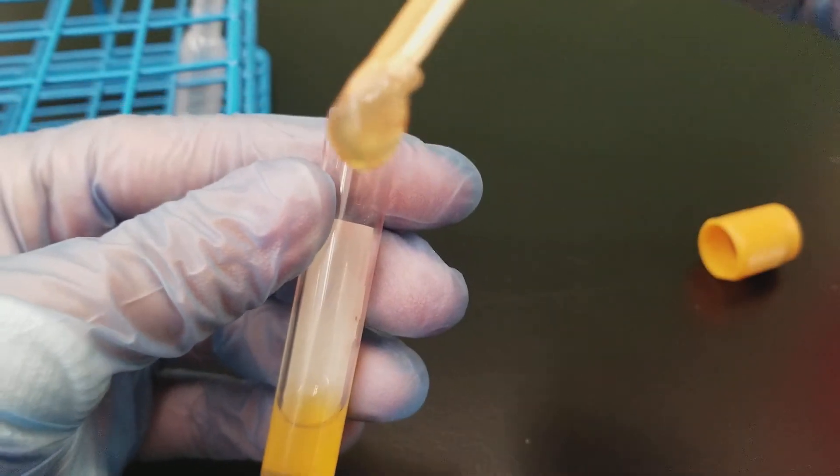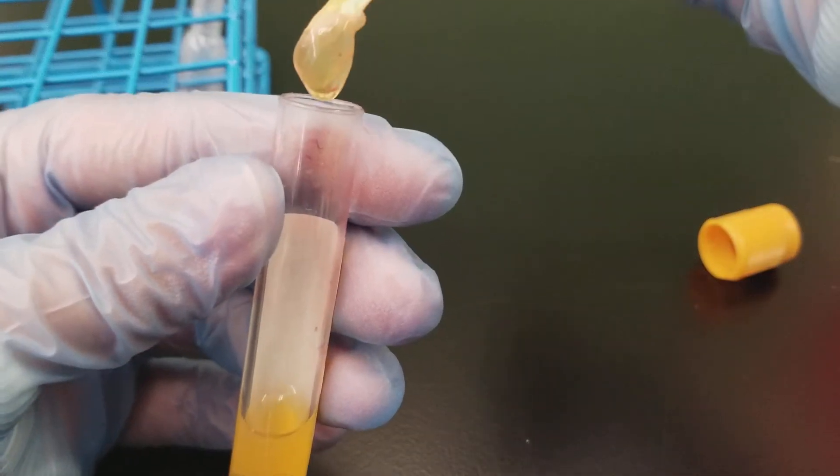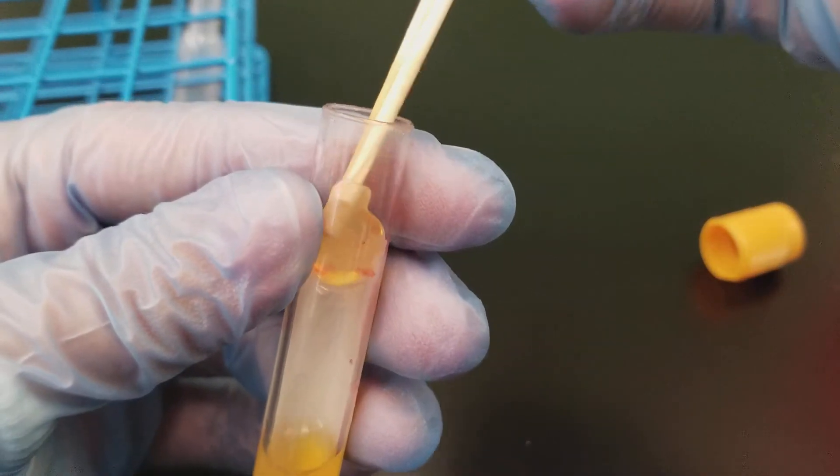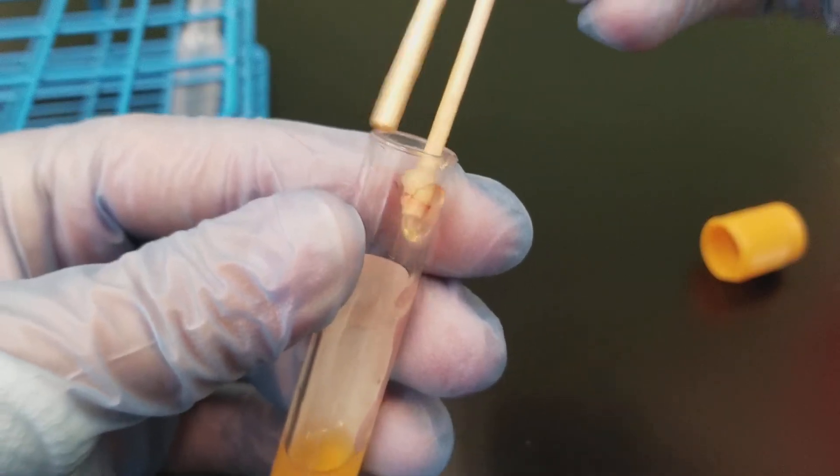See that big old blob? That's the fibrin clot and it has specimen in it. So we're just going to squeeze it out on the side of the tube.